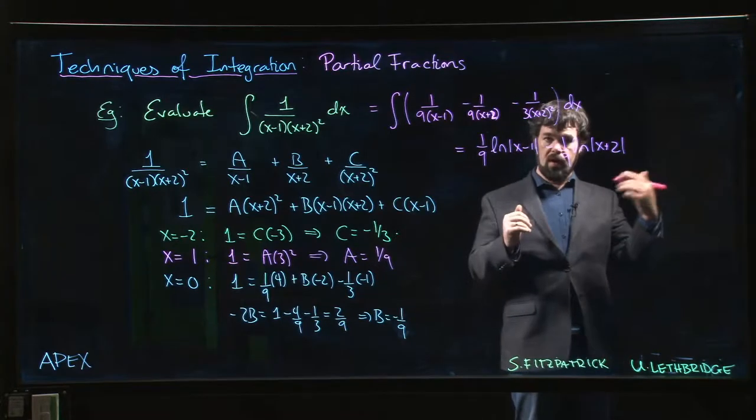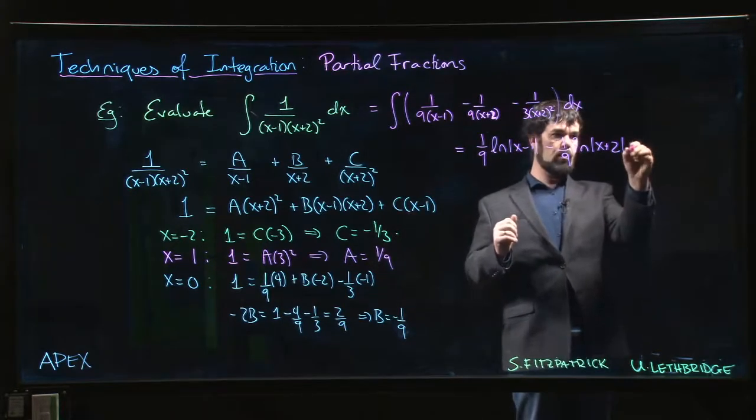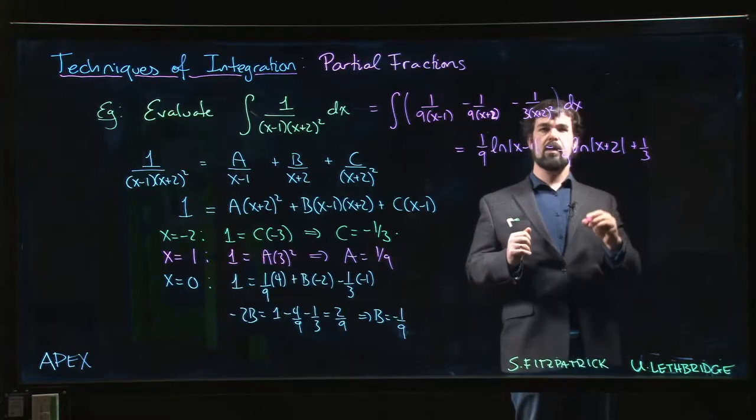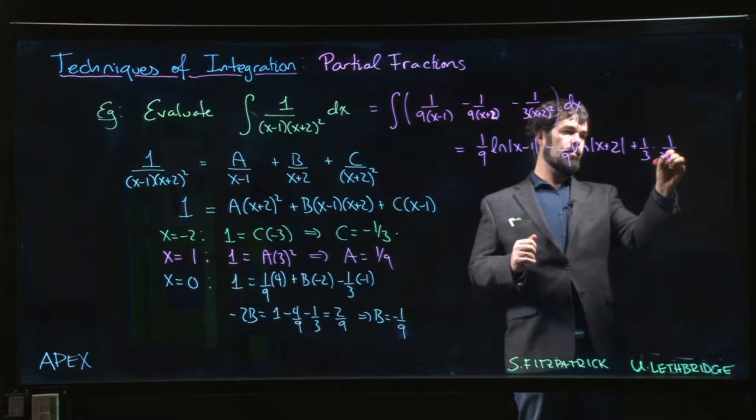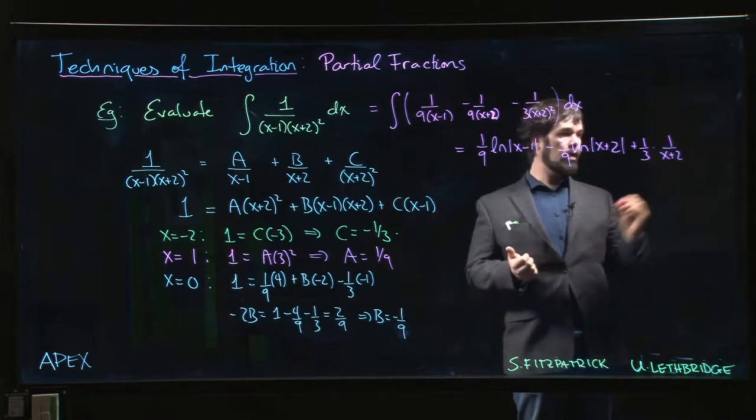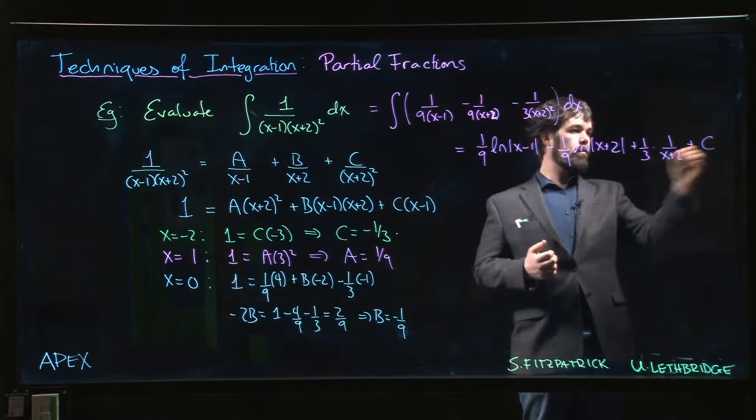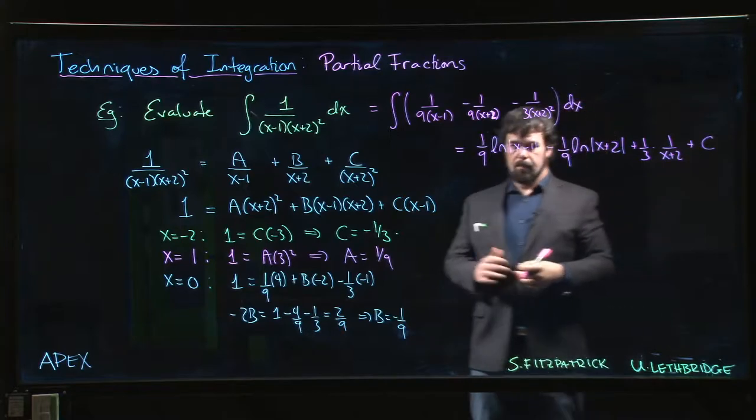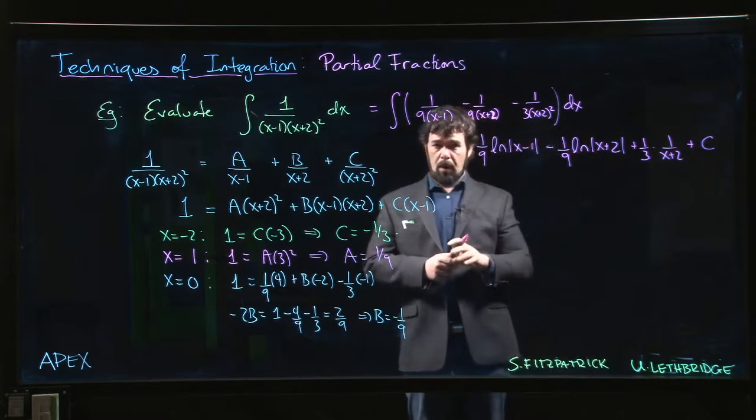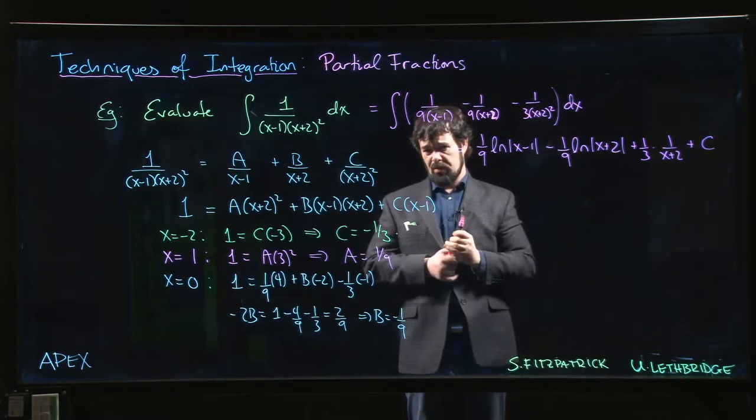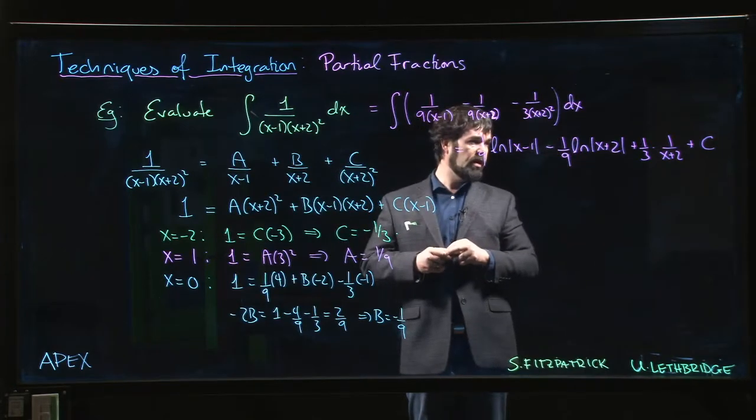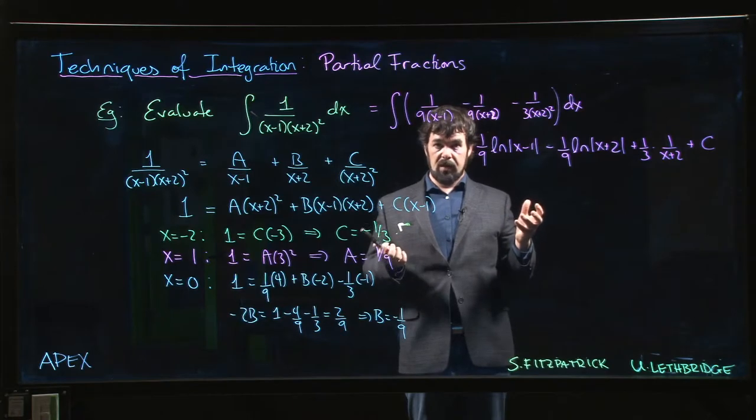And here we've got (x plus 2) to the minus 2. Adding 1 to the exponent gives me minus 1, we get 1 over 3 times 1 over (x plus 2), right, (x plus 2) to the minus 1 plus our constant. So we can leave it like that. Some people might want to use laws of logarithm properties to combine these into a single term. It's not absolutely necessary, but you can do it if you're so inclined, and that gives you the answer.